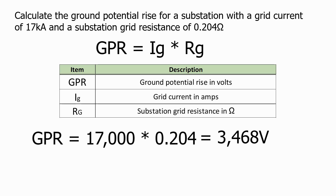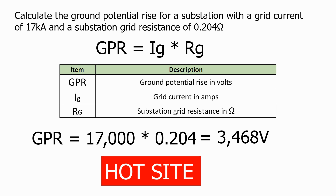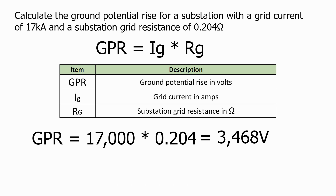This means that looking remotely at the substation, all of the ground below the substation will rise 3468 volts higher than remote Earth. Many utilities define a substation that has a ground potential rise greater than 650 volts as a hot site, and this substation would therefore fall into that category.